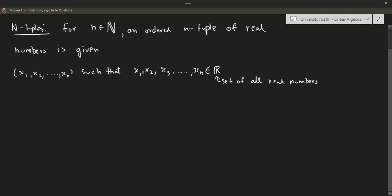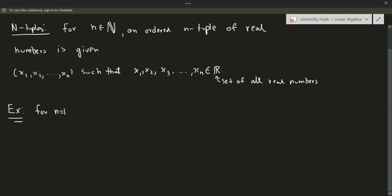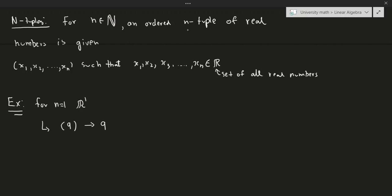Just to recap: for any n in the natural numbers, an ordered n-tuple of real numbers is just a bunch of numbers in the real number space. This description might seem a little bit confusing at first, so let's go into a few quick examples. For n equals 1, for example, we're going to have R1. An example of this would be (9), though we don't necessarily need to put brackets — we could just write the number 9. This would literally just be the number 9.